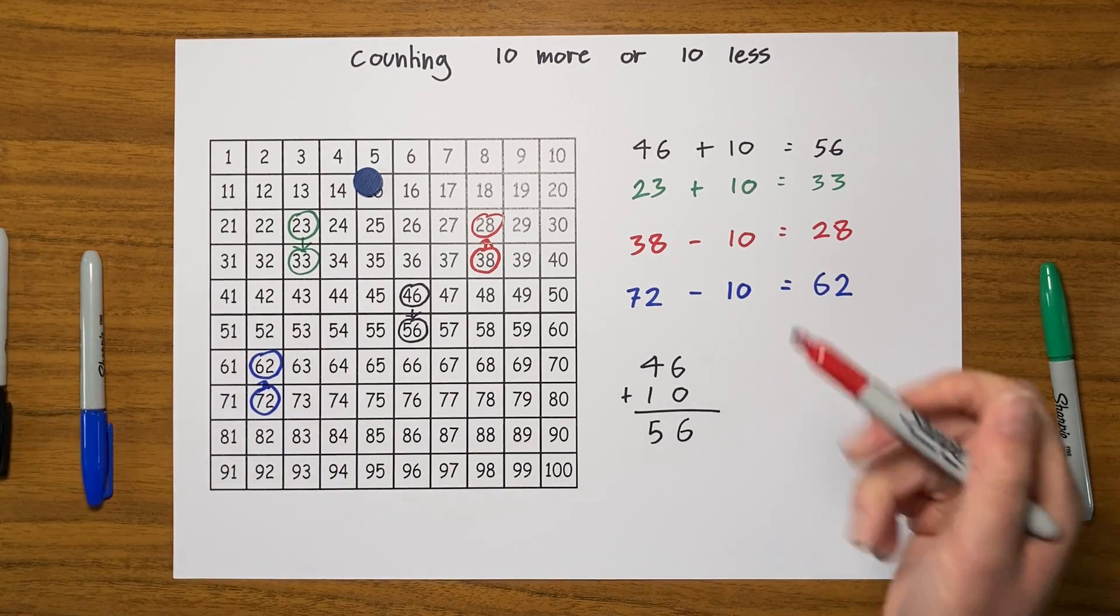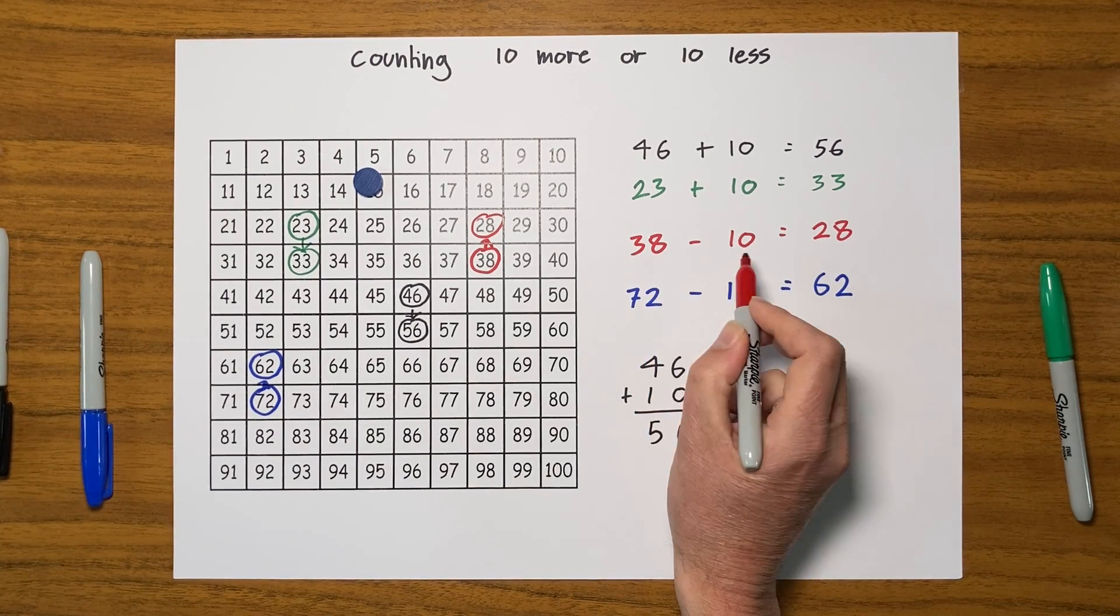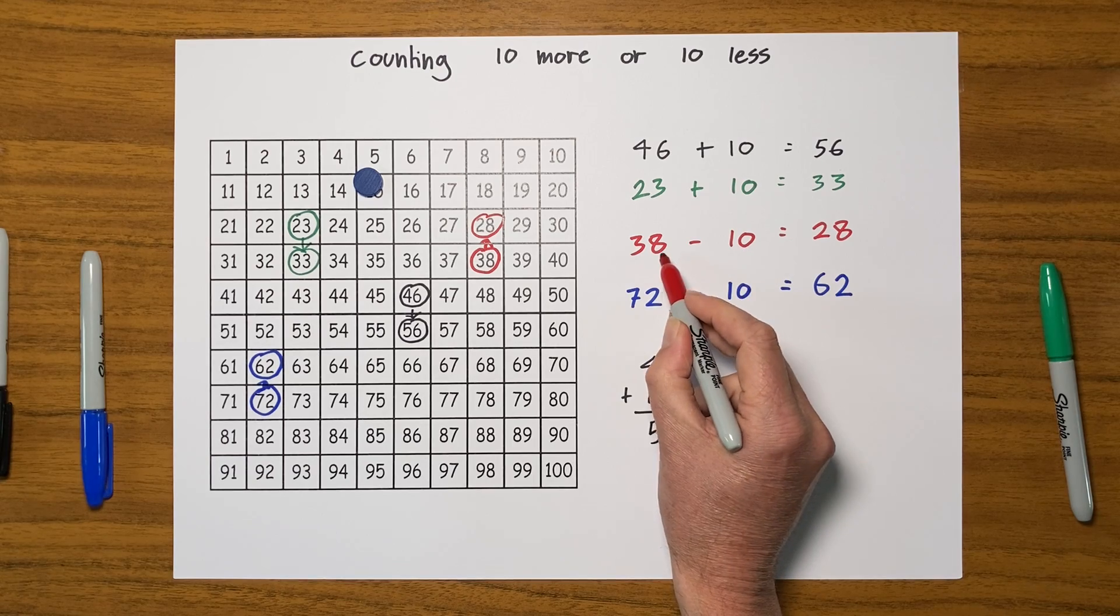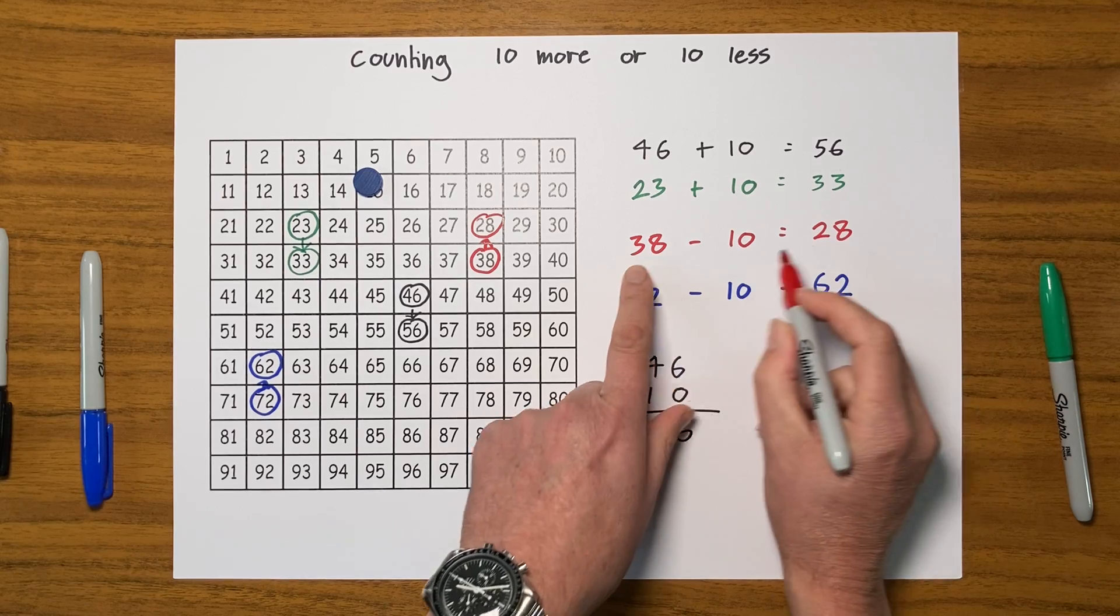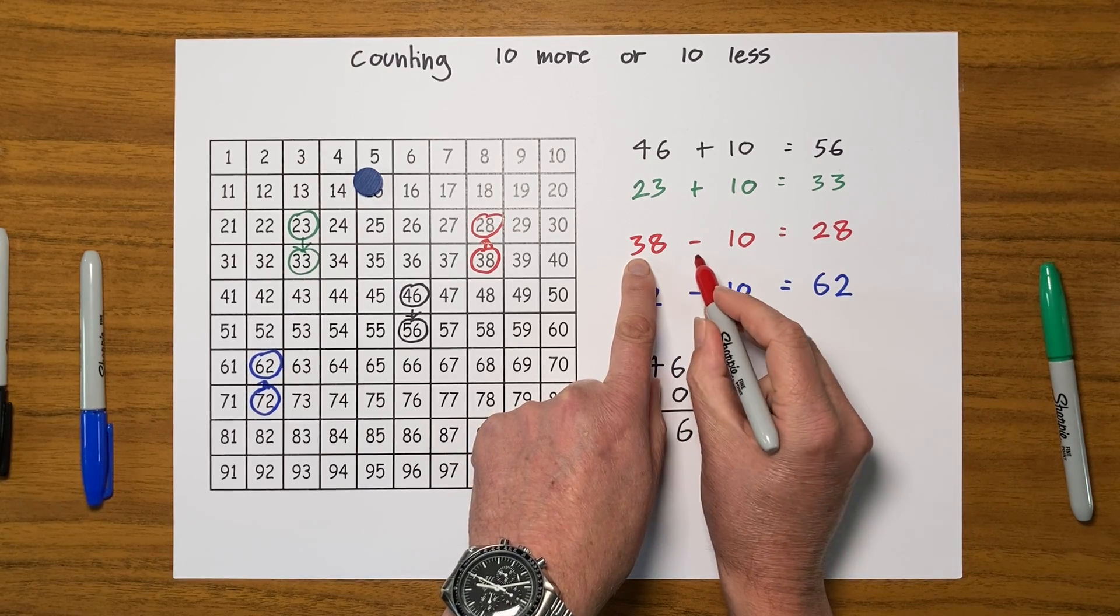And to see what happens. Now here I had 38 and I took away 10, but I didn't take away any units so that 8 must stay the same, which it does. But here I had 3 tens take away 1 ten gives me 2 tens.